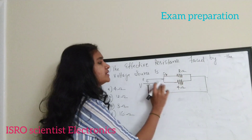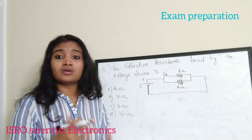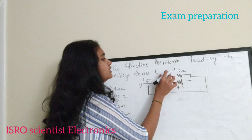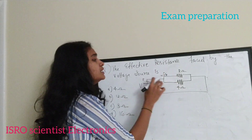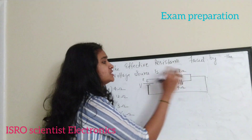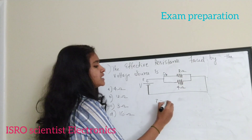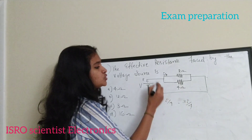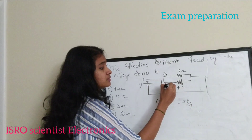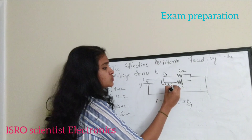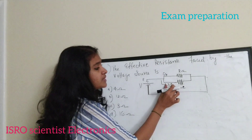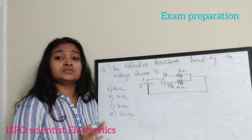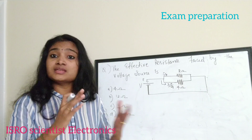For this question, the current i enters the parallel connection and gets divided. The i/4 portion of the current flows through one branch. So i minus i/4 equals 3i/4, which is the remaining portion flowing through the other branch. Since there are only two branches, one carries 3i/4 and the other carries i/4, which is the current division rule.